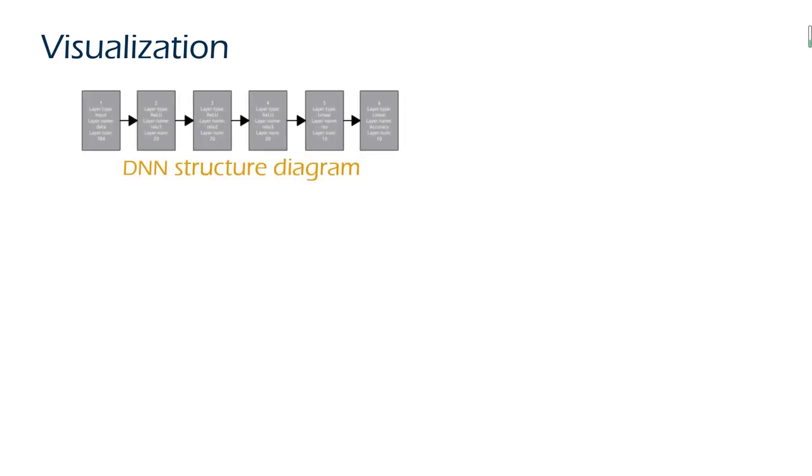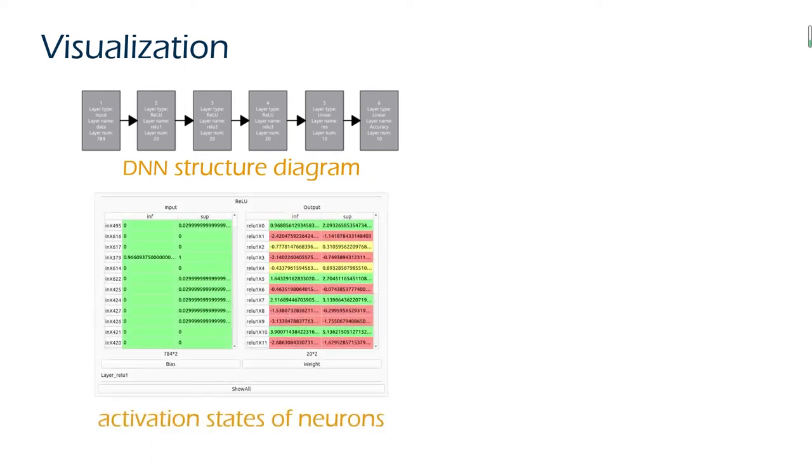PRODeep provides three main visualization components. The DNN structure diagram describes the organization of the neural network, listing the type and size of each layer. PRODeep can also help users observe the internal state of the neural network. By checking the upper and lower bounds of neurons, three different colors are used to describe the activation status of neurons.